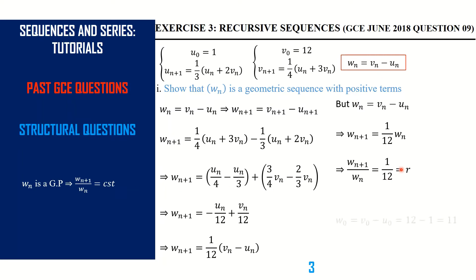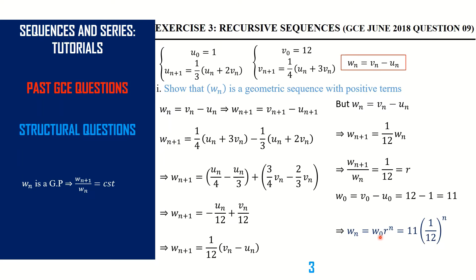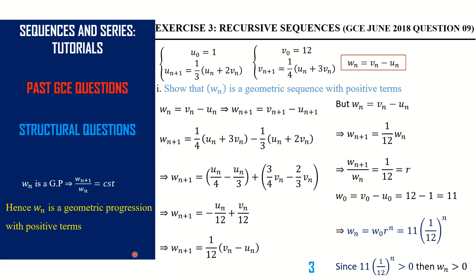Now we need to show it is positive, so let's find the initial term. w(0) = v(0) − u(0). We start from w(0) because we have information about v(0) and u(0). Our w(0) = v(0) − u(0) = 12 − 1 = 11. So w(n) = 11 × (1/12)^n. Clearly, for all values of n in the set of natural numbers, this is always positive. We conclude that w(n) is a geometric progression with positive terms.